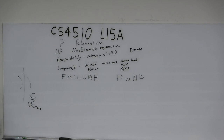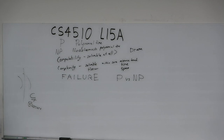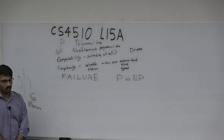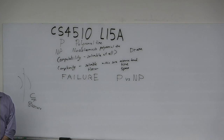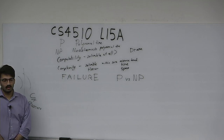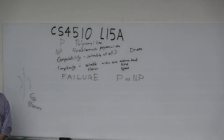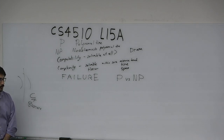Even recently, in algorithms we proved two-SAT is in P and three-SAT is in NP. Then someone came up with a reduction from three-SAT to two-SAT. If you recall, a reduction to a problem in P gives you a polynomial time algorithm for every problem in NP, showing P equals NP. Of course it was wrong, but catching these bugs is very subtle.